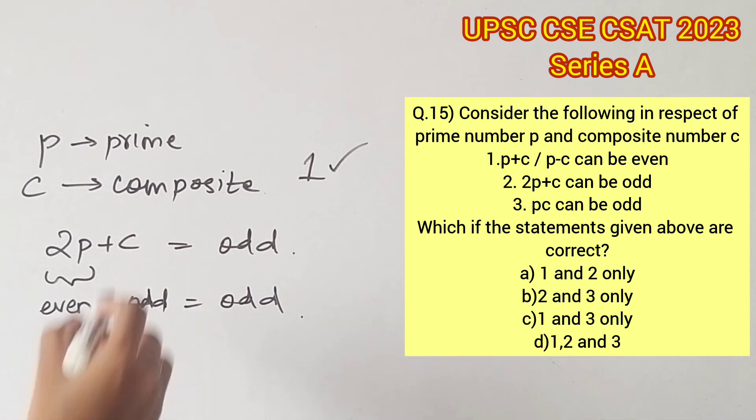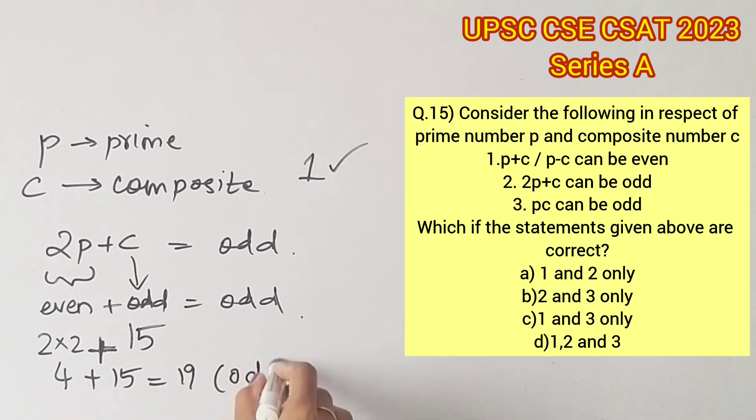Therefore, all we have to do is substitute an odd composite number in the place of c. Let's substitute 15 in the place of c and 2 in the place of p. So 4 plus 15 will give us 19 which is an odd number. Therefore, statement 2 is also true.